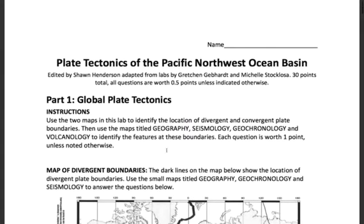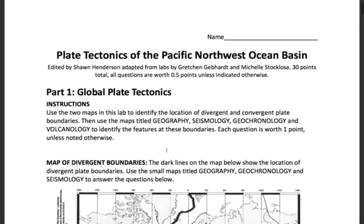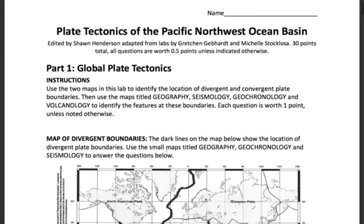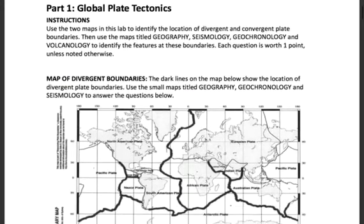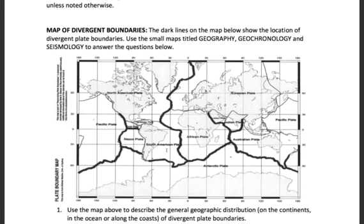We're going to be looking at plate tectonics. We'll start by looking at a global view of plate tectonics, and then zoom in more closely to the Pacific Northwest. We're going to start by looking at a map of the divergent plate boundaries. This will all be a lot easier if you have completed the reading, the lectures, and the homework before diving into this lab. Our divergent plate boundaries are boundaries where the plates are moving away from each other, and that's what's shown on these maps.